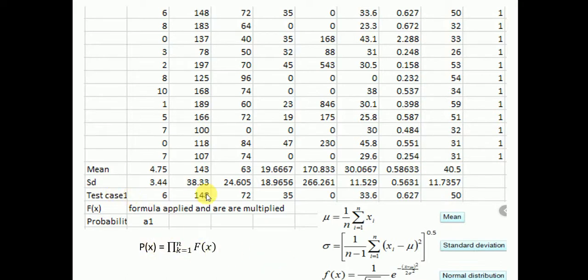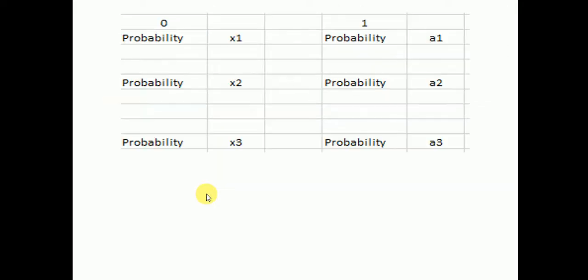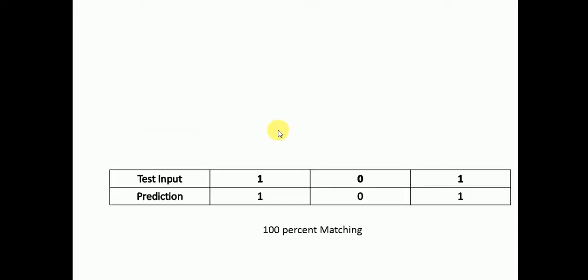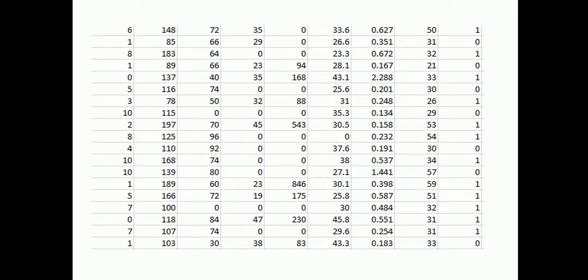After multiplying the f(x) values, we get the probability for class zero and class one. We compare which is higher: if the class zero probability is greater we assign class zero, otherwise class one. The prediction is then compared against the given input labels, and if they match we get 100% accuracy.